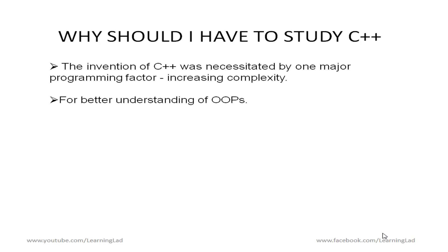For better understanding of OOP, some people say that C++ is the best language to learn the object-oriented programming approach. The next reason is about efficiency — C++ is very efficient. In terms of speed of execution, C++ is very close to the execution speed of C. So C++ allows many more features than C while also being very near to the execution speed of C, and that's why C++ is a great choice.